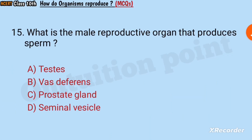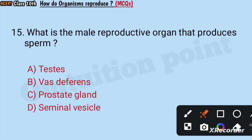Question number 15: What is the male reproductive organ that produces sperm? Testes, vas deferens, prostate gland, or seminal vesicle? Answer: Testes. Testes produce sperm.